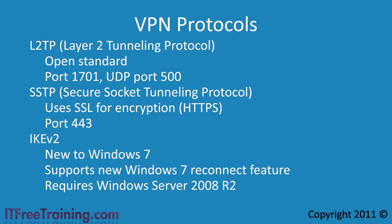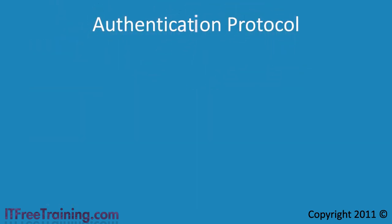In order to use IKE version 2 you must also have UDP port 500 open. Once you decide which protocol to use for your connection, you next need to decide on the authentication protocol. The authentication protocol is used to verify who you are, and this can be done using a username and password or certificates.